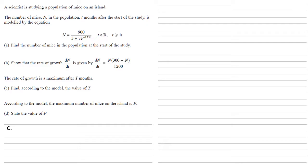Part C: we're told that the rate of growth is a maximum after t months and we want to find, according to the model, the value of t. Looking at how dn by dt is written — n times 300 minus n over 1200 — this forms a symmetrical graph where the maximum, due to symmetry, is halfway between 0 and 300. So n is going to equal 300 over 2, which is 150. We get the maximum when the top of the fraction is 150 times 300 minus 150.